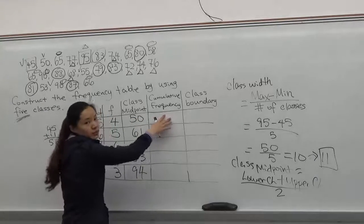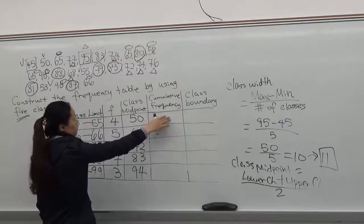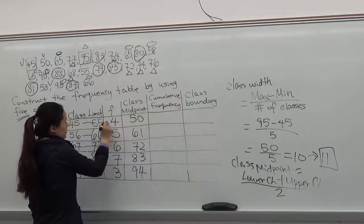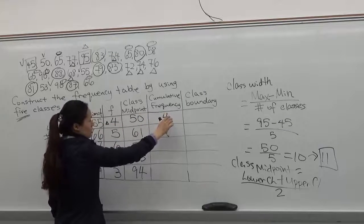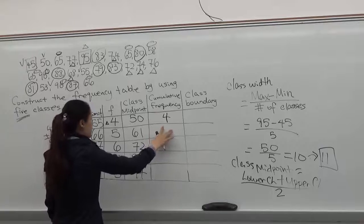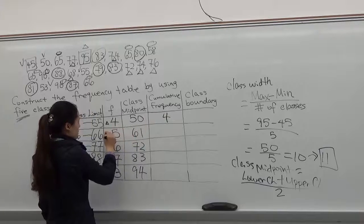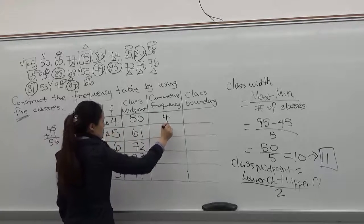To find cumulative frequency, we'll start with the first frequency. The first frequency is 4, so you put 4. The second cumulative frequency, you have to add the first 2. 4 plus 5 is 9.